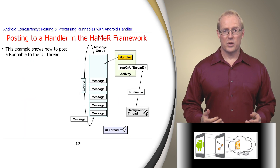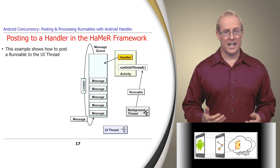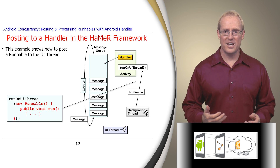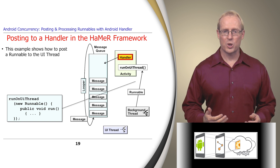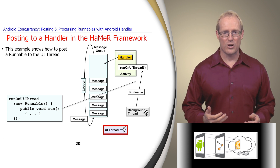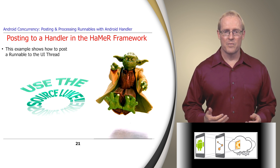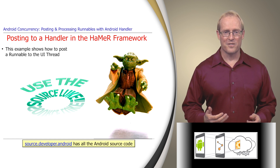Now that we've shown the key post-related methods in the Android handler class, we'll analyze an example of how to post a runnable command to an activity via its runOnUiThread method, which uses an internal handler object to ensure this runnable is executed in the context of the user interface thread. Since this example examines a lot of code, you may want to download the Android open source release available at this link and follow along.